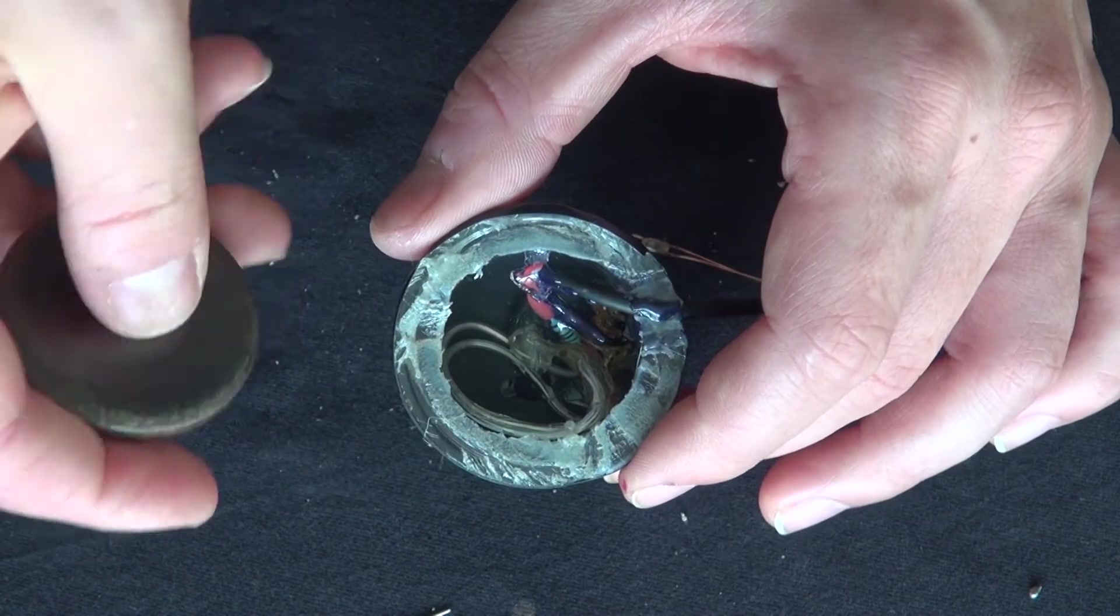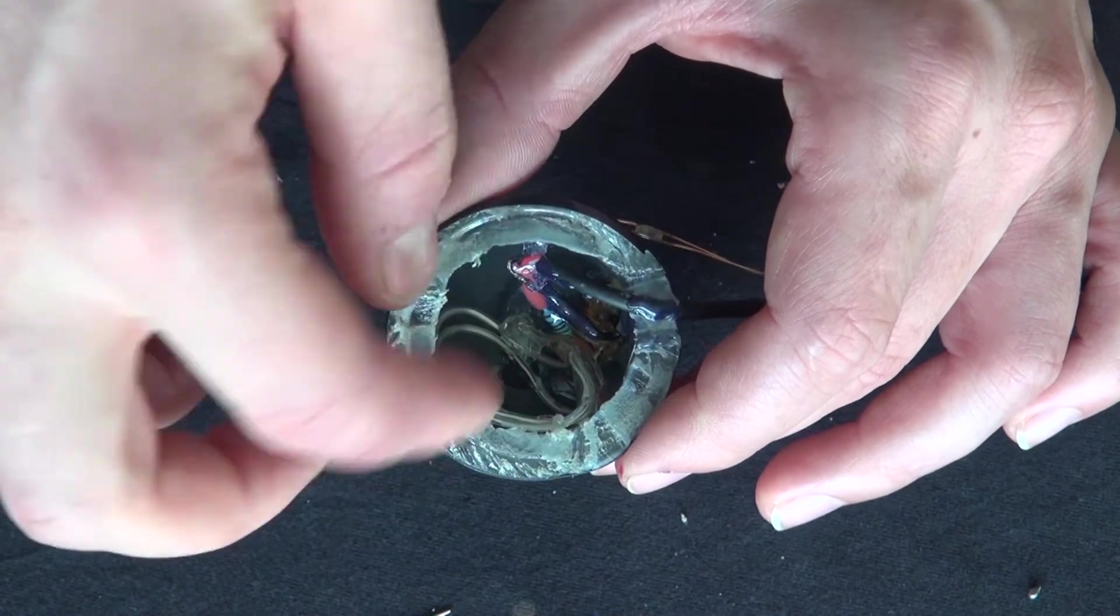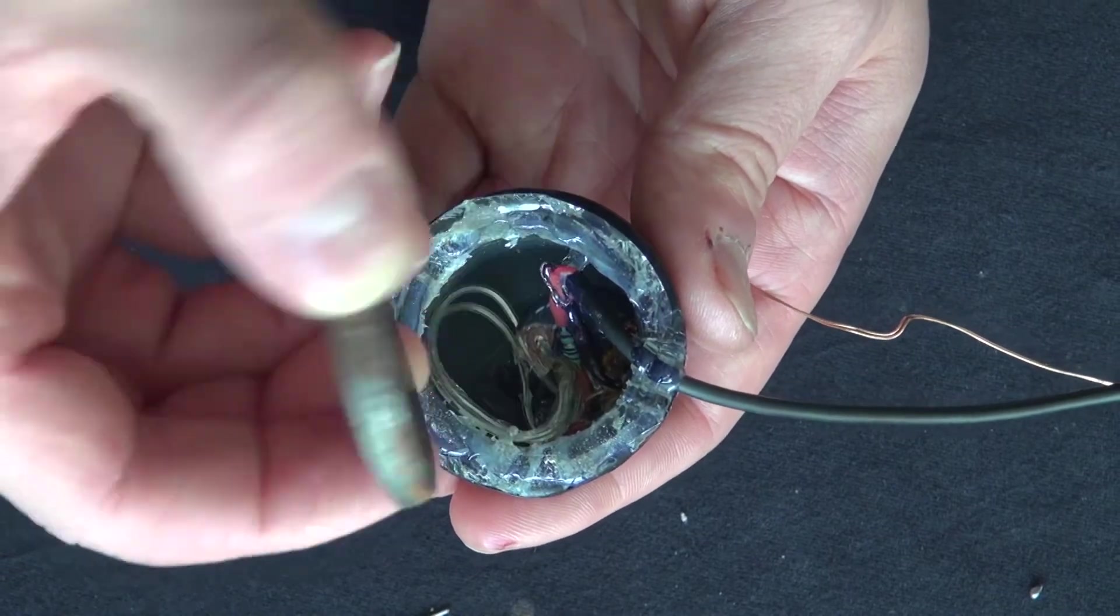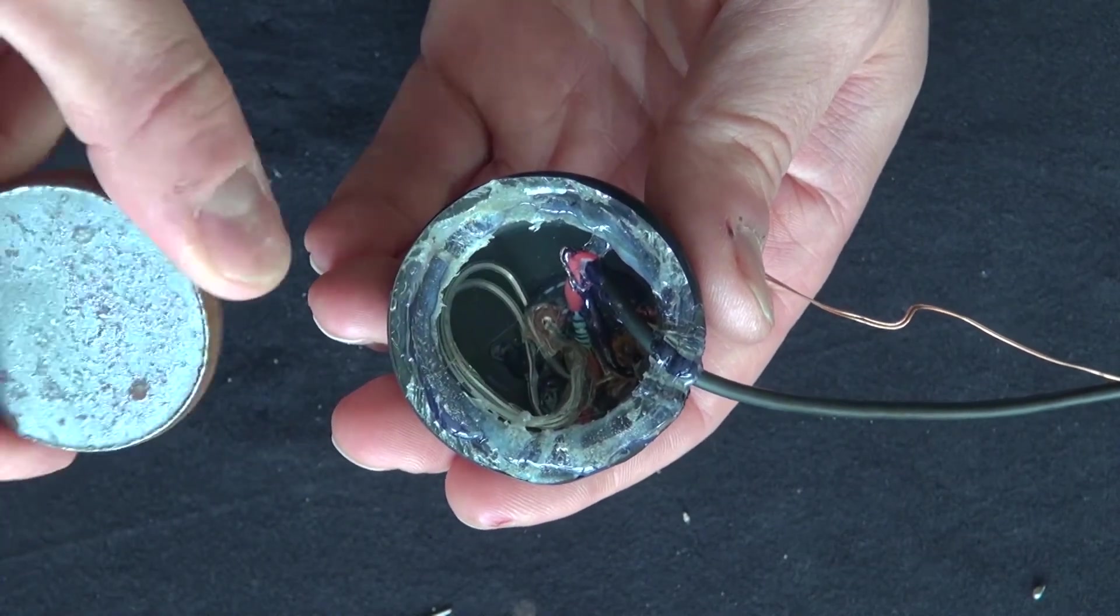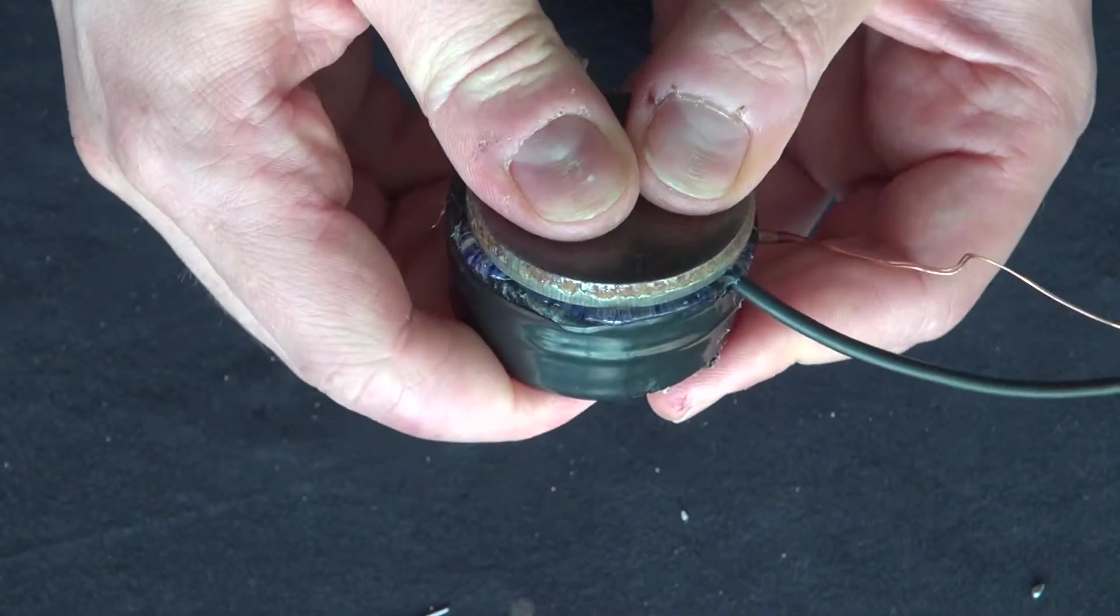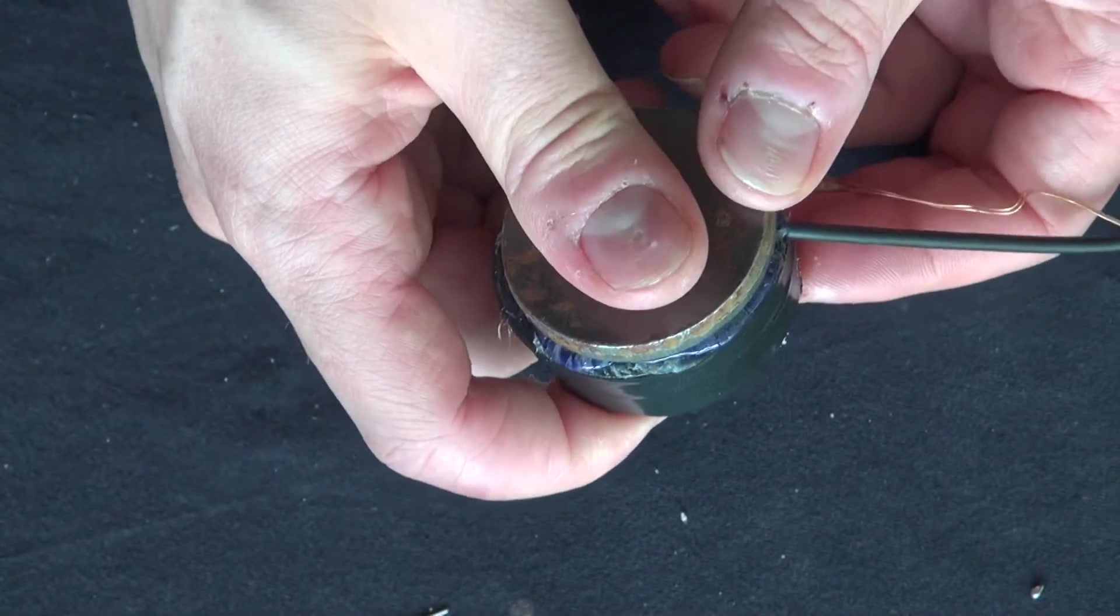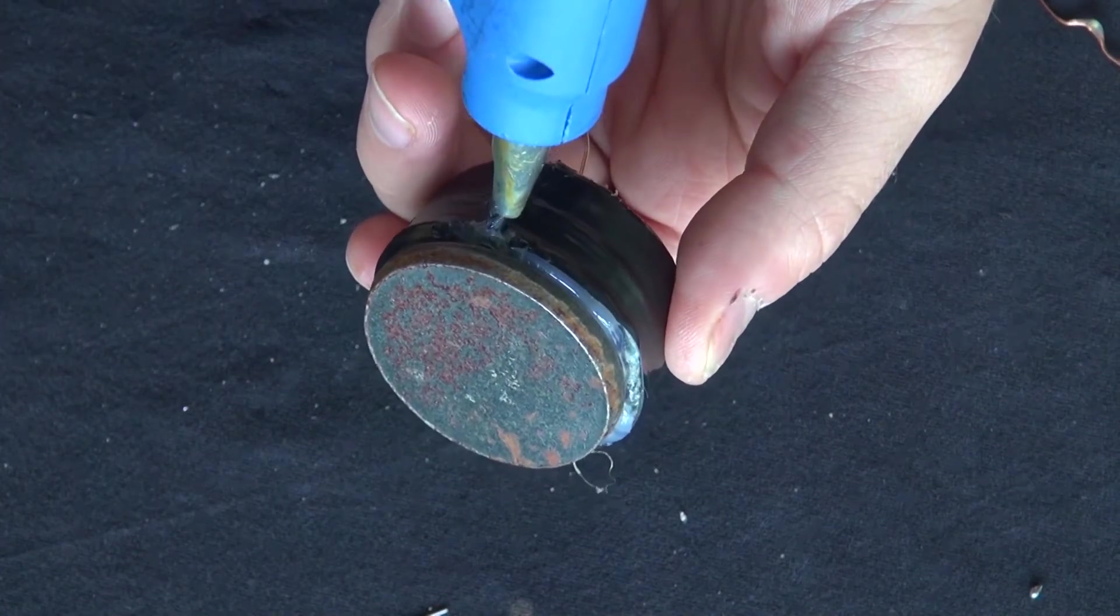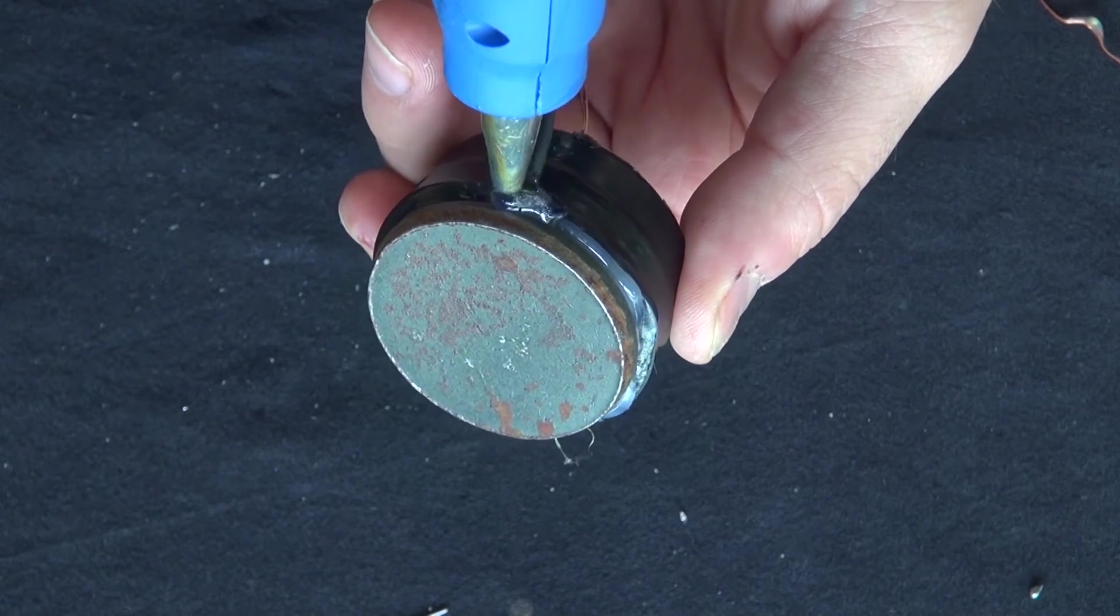I have this iron disc that I'm going to glue into place on this base here. There we go. Now I'm going to go ahead and glue the edges and glue everything so everything is sealed tight.